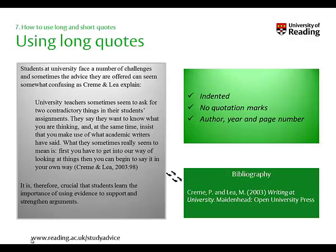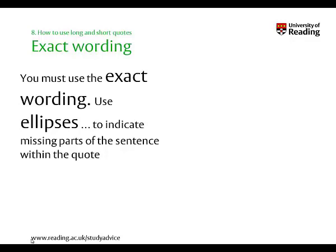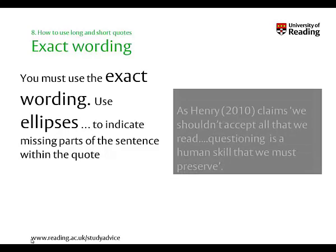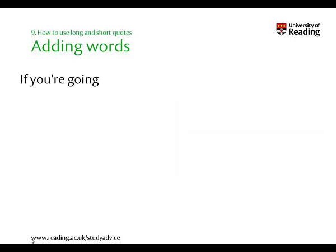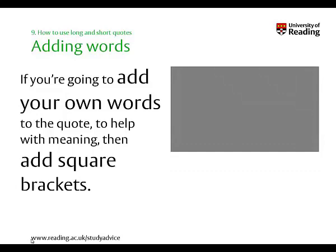Finally, just a couple of conventions to be aware of when using quotes. First, you must use the exact wording of the quote including the punctuation that is used. If you wish to omit any parts of the sentence you must use ellipsis, as in this example. In addition, if you wish to add any additional words — perhaps to make sense of the quote once you've removed some parts of it, or to add back in some context — then use square brackets to indicate the part of the quote that is in fact your own words. This example helps to show this.